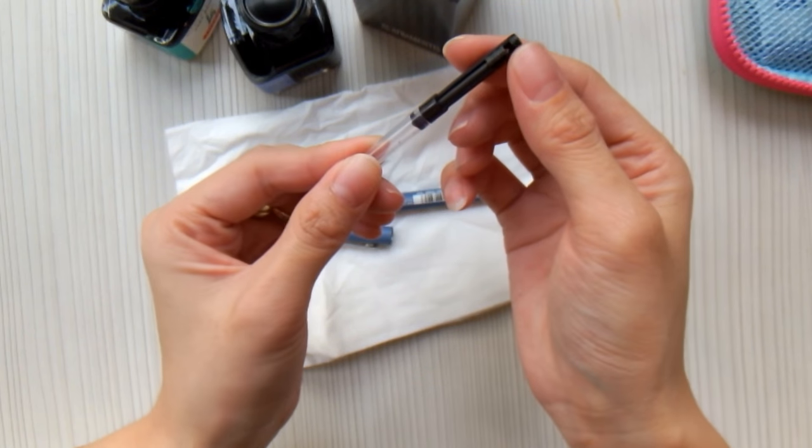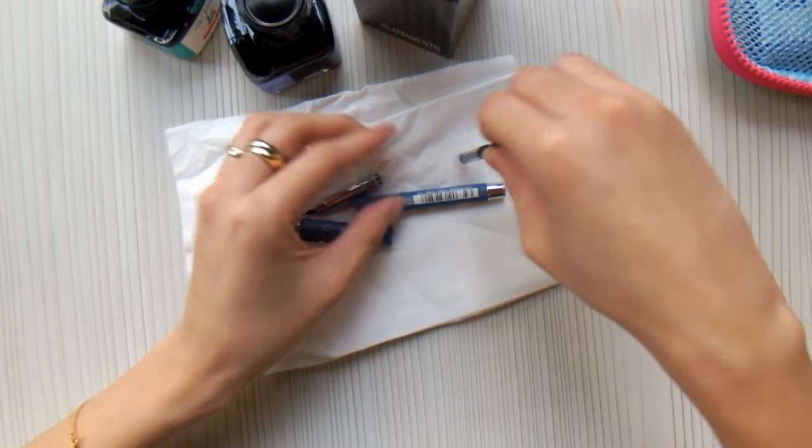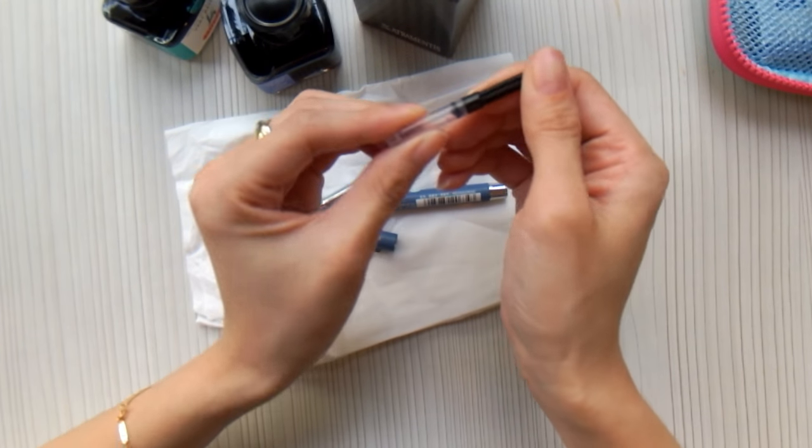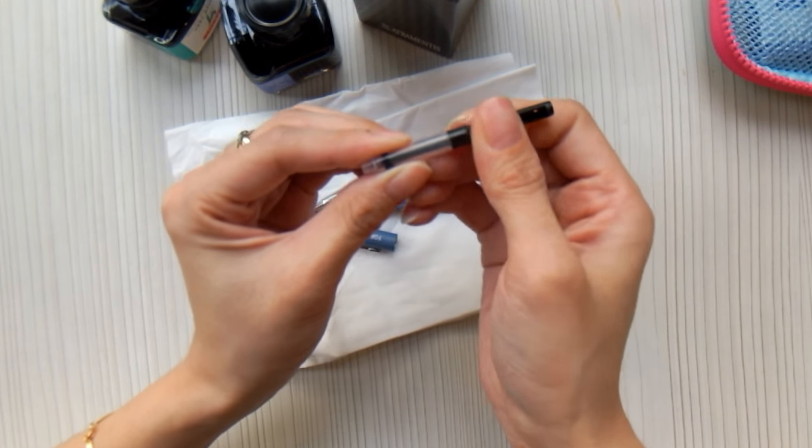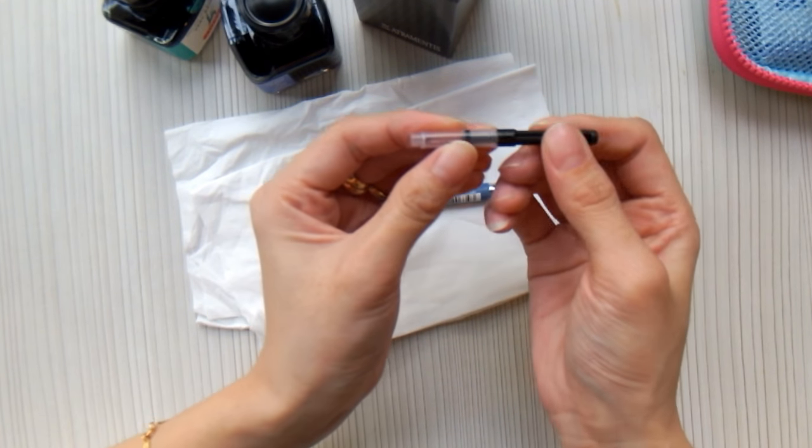This is called a converter. So for this type of converter, there's a level for you to push up and down. As you can see here. I push it down and push it up. You can see clearly, right? So when you want to fill up the ink, you have to push the level down.